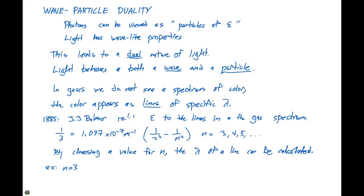For example, if we looked at n equals 3, we can say that 1 over lambda equals 1.097 times 10 to the minus 7 meters to the minus 1 times (1 over 4, which is 1 over 2 squared, minus 1 over n squared). N is 3, so n squared is 9. If we do this math, we get 1.524 times 10 to the 6 meters to the minus 1 power.